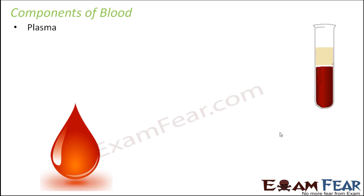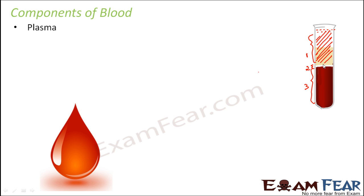Looking at the blood sample after centrifugation, we can see three different layers. The first layer is at the top, there is a thin layer in between as the second layer, and a red-colored layer at the bottom as the third layer.